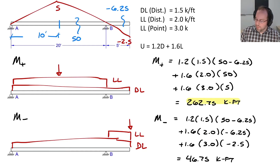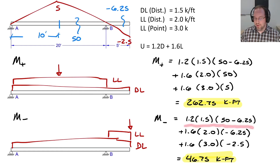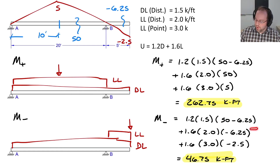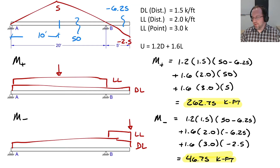It turns out moment is still positive — that can happen. The reason is that dead load is always applied, building up a large positive moment at that region which cannot be overcome by live loads placed on the cantilever. So in this case, moment will vary somewhere between 46.75 and 262.75 kip-feet, with no possibility of an actual negative moment in this region.